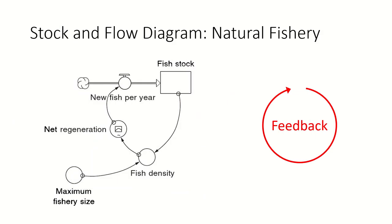Stock and flow diagrams only get interesting if you have feedbacks. Here's a very simple model of a fishery: the thing we're monitoring is the number of fish, and we know the fishery has a regeneration rate. When you get more fish, the regeneration rate might go up or down, but whatever it does, it will contribute to more fish later.